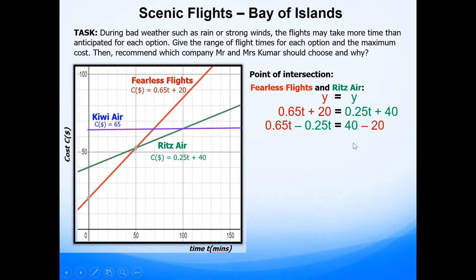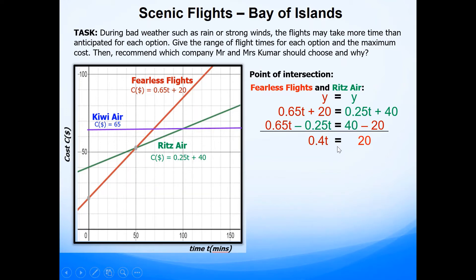0.25T + 40, because that's where they meet and the values will be the same. Collecting like terms: 0.25T switches sides to become negative 0.25T, and plus 20 becomes minus 20. So 0.65T − 0.25T simplifies to 0.4T, which equals 40 − 20 = 20. Dividing by 0.4 gives T = 50 minutes. This is the time value when the two lines intersect.